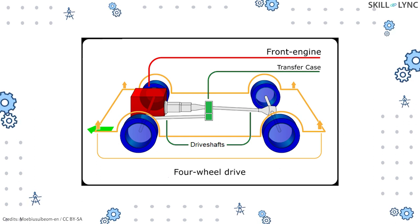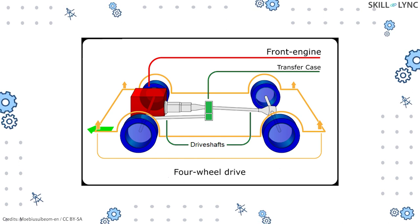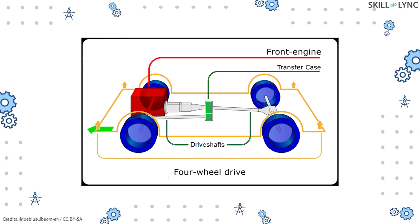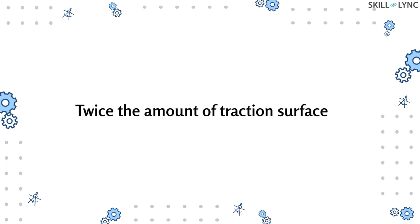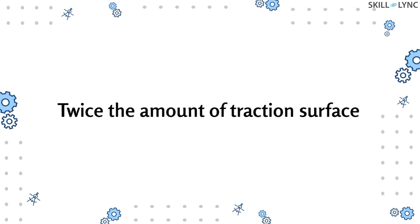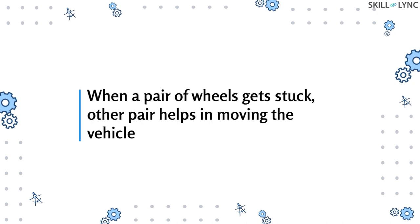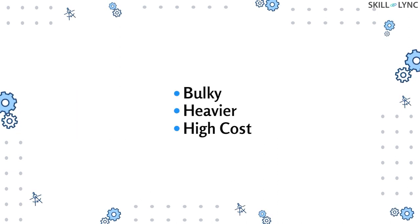At last we have the four wheel drive. In this type the engine is located at the front and power is transmitted to all four wheels via a transfer case. It has a front and rear differential, and this type increases the maneuverability of vehicles traveling on rough roads and tracks. The major advantage of this layout is that it produces traction at all four wheels — if a pair of wheels gets stuck due to conditions like mud, the other pair of wheels helps in moving the vehicle.